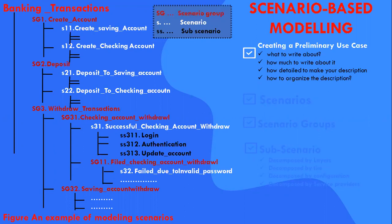We will develop the use case in practice with an example. This figure shows an example of the scenario model in which the functions of a banking system are decomposed graphically into multiple levels of scenario groups, scenarios, and sub-scenarios. For convenience, they are represented with three different colors: scenario groups with dark maroon, scenarios with white, and sub-scenarios with black.